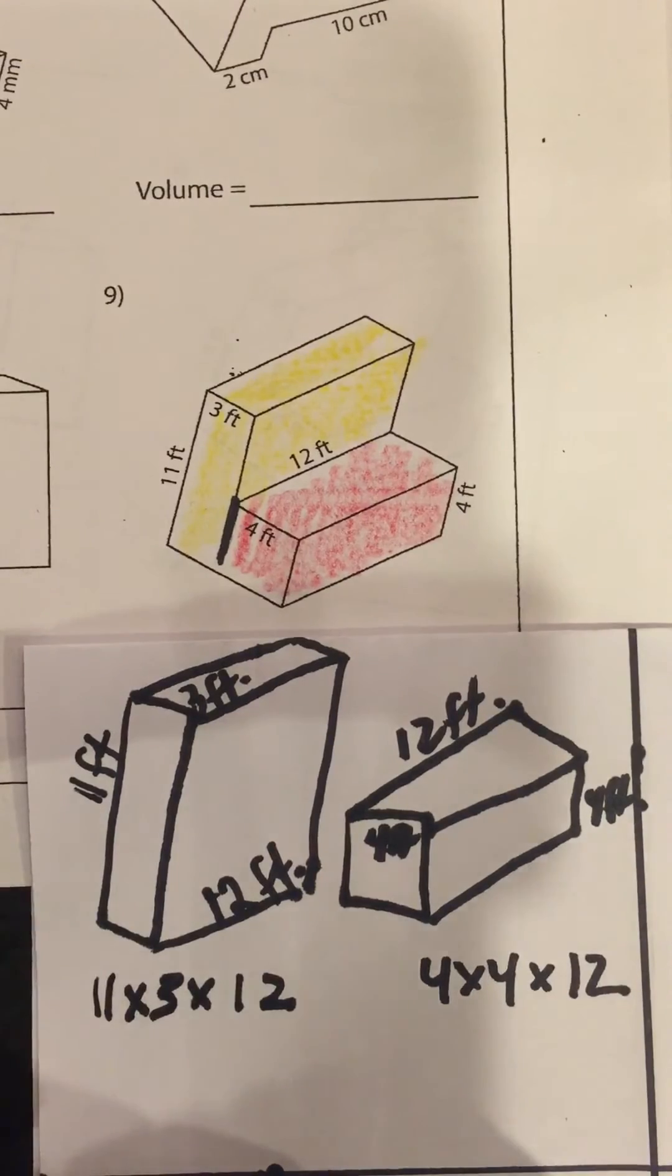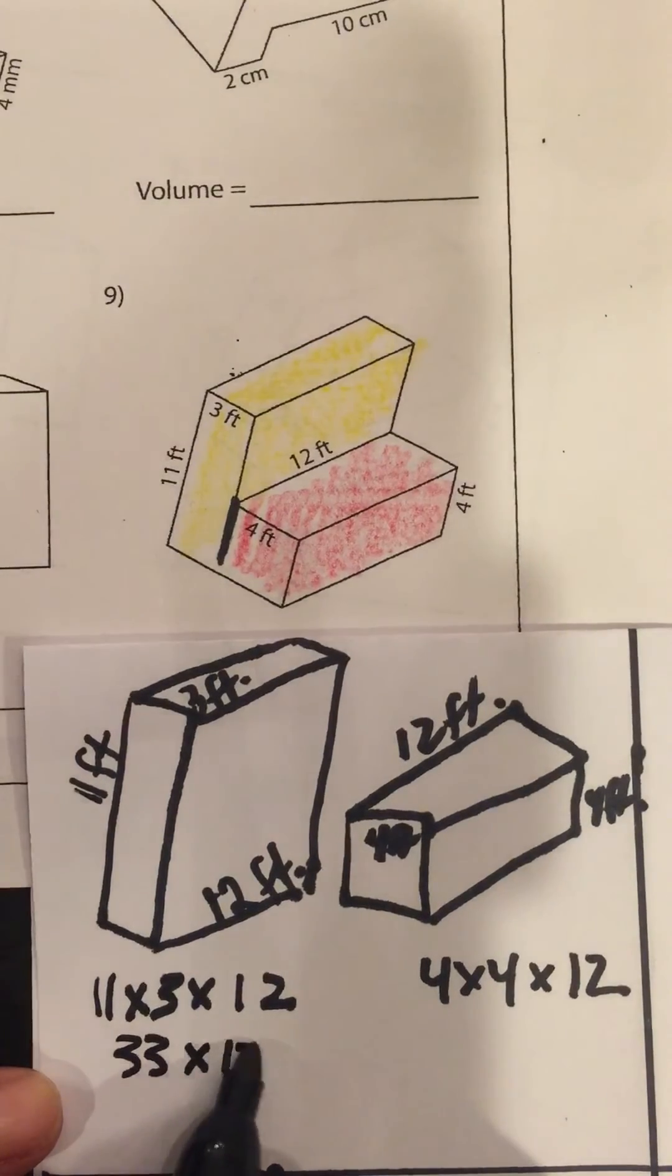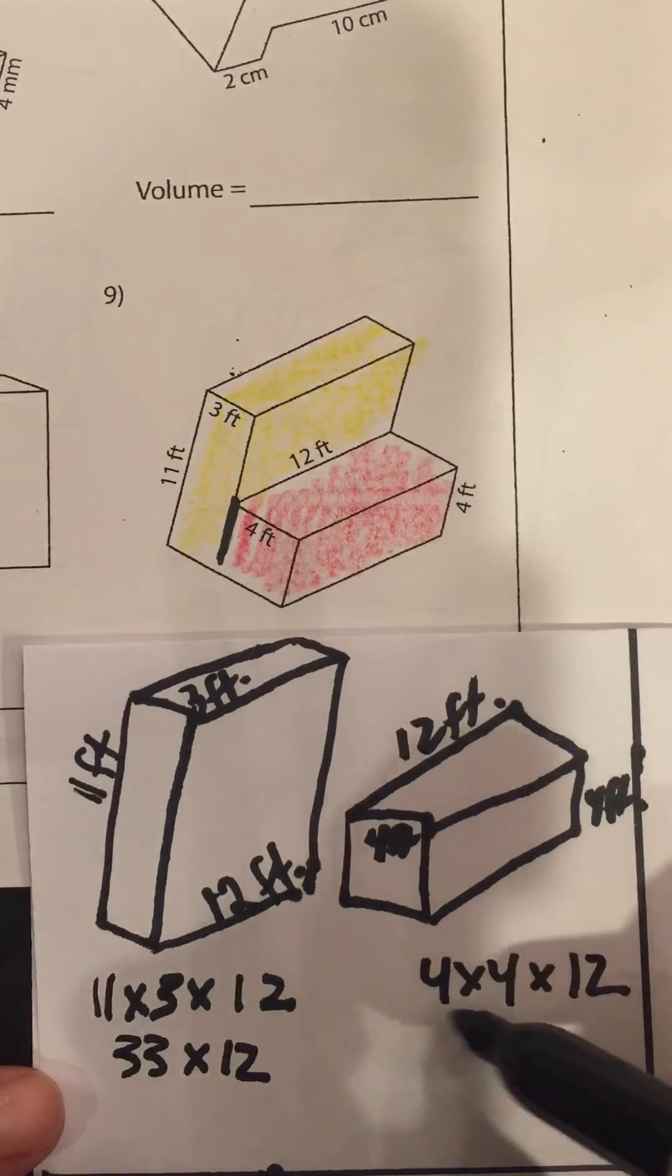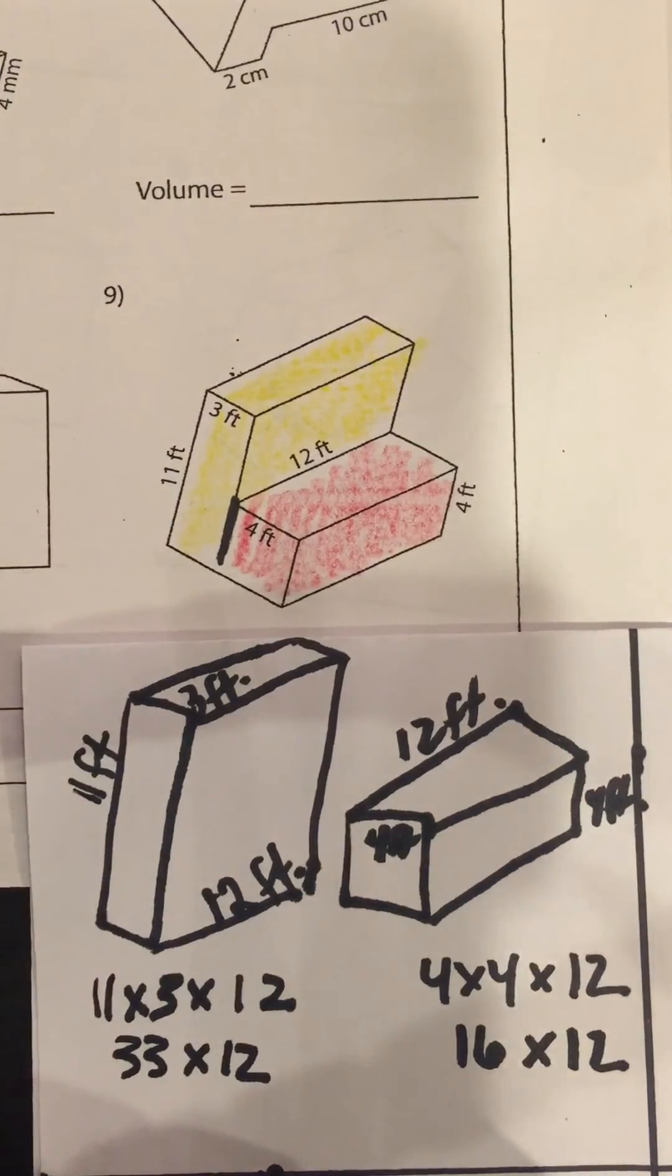Okay, 11 times 3 is 33 times 12. I'm going to do the easy math first, 4 by 4 is 16 times 12. We're going to have to do out some long multiplication here, 33 times 12, and also 16 times 12.